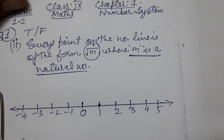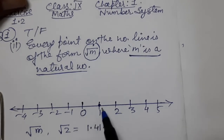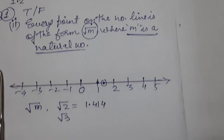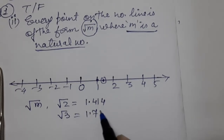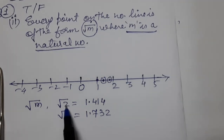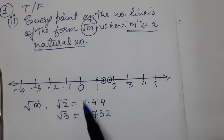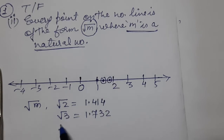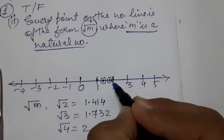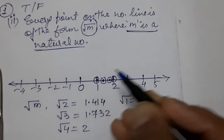Let's look at √m with examples. √2 is approximately 1.414, so it will appear somewhere here on the number line. √3 is approximately 1.732, so it goes here. √4 gives us 2, so 2 is here. √1 gives us 1, so 1 is here. Many numbers are appearing.